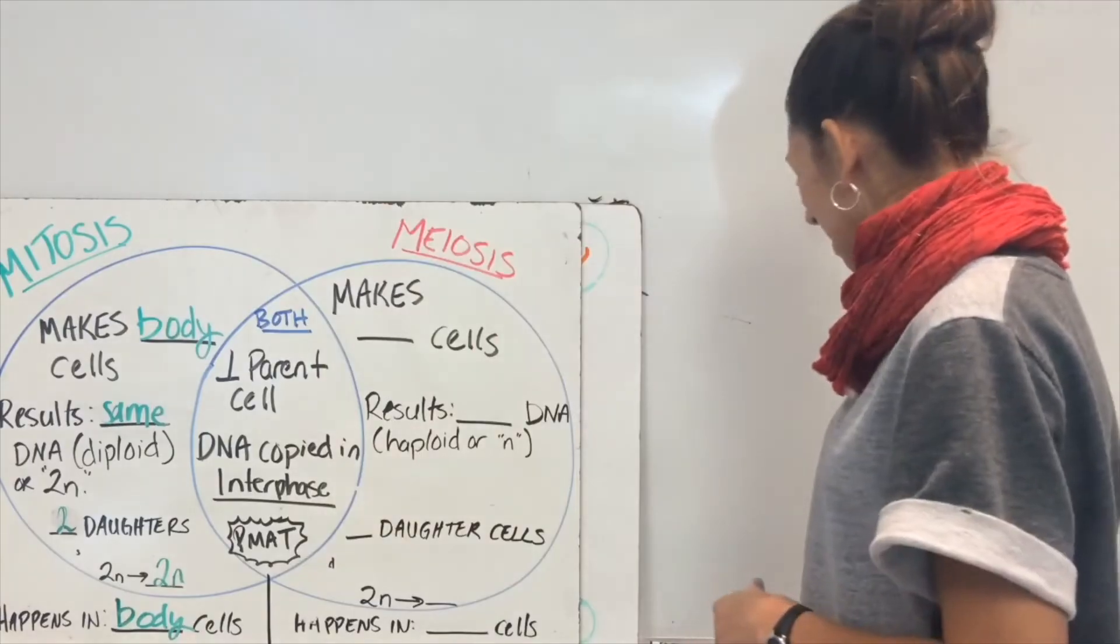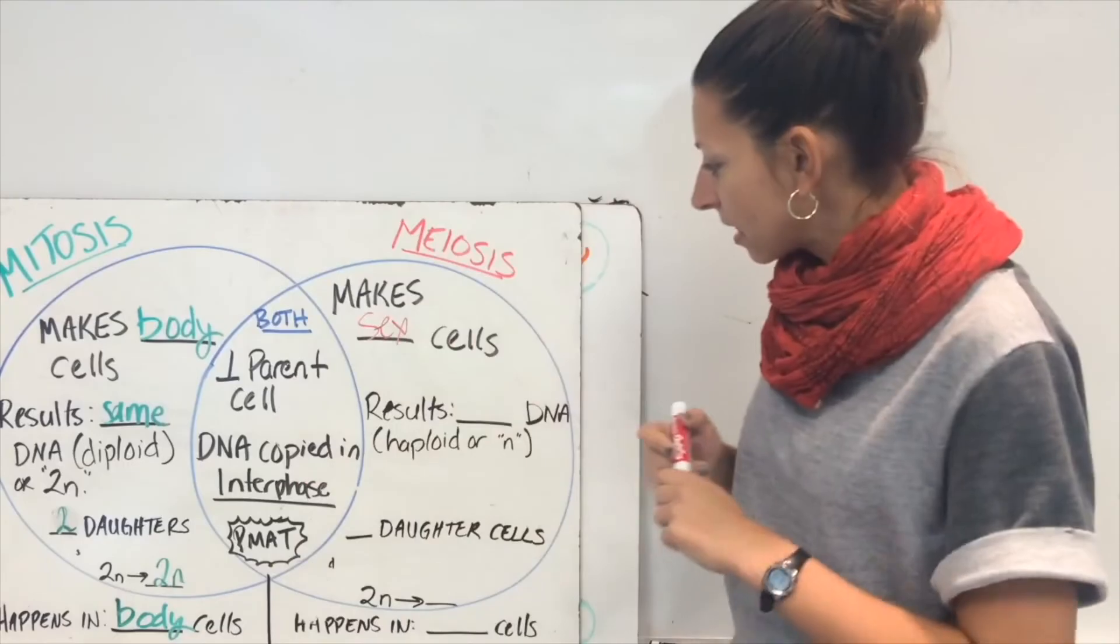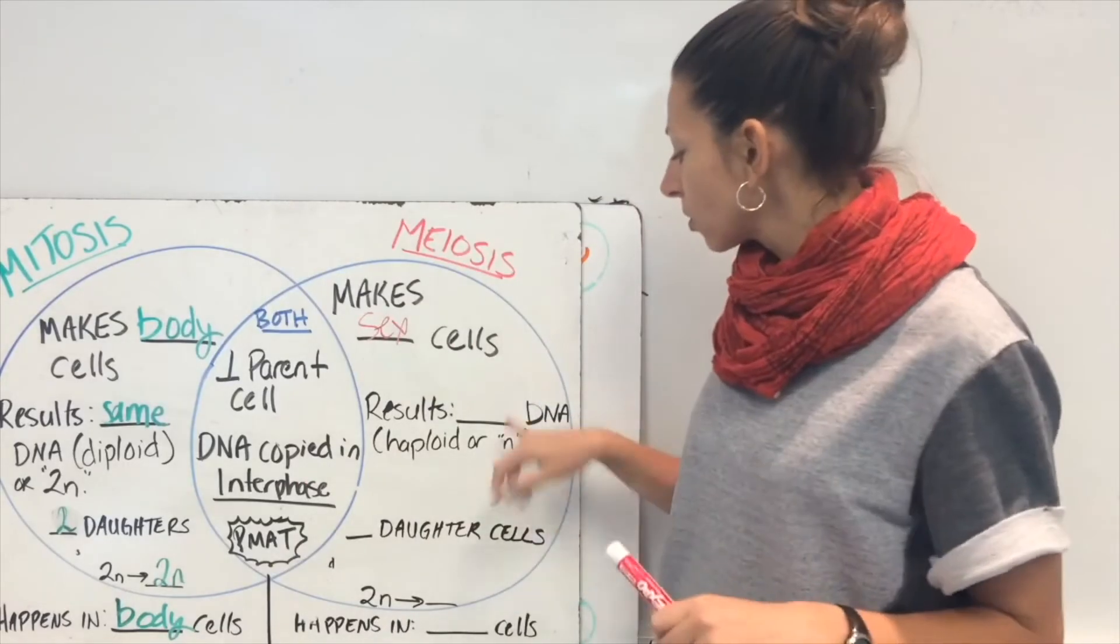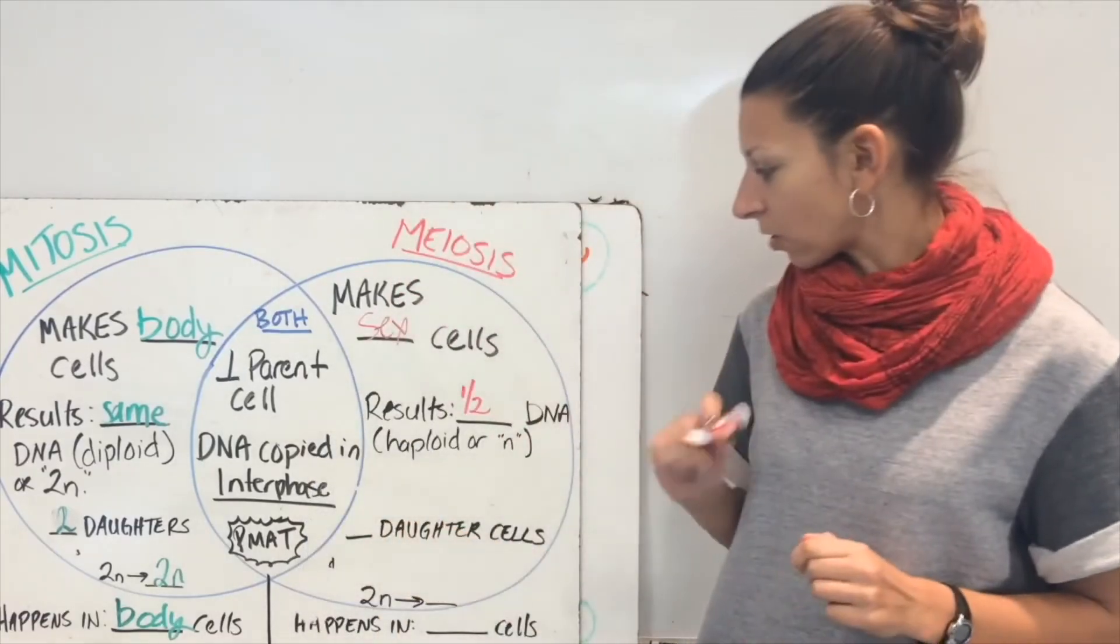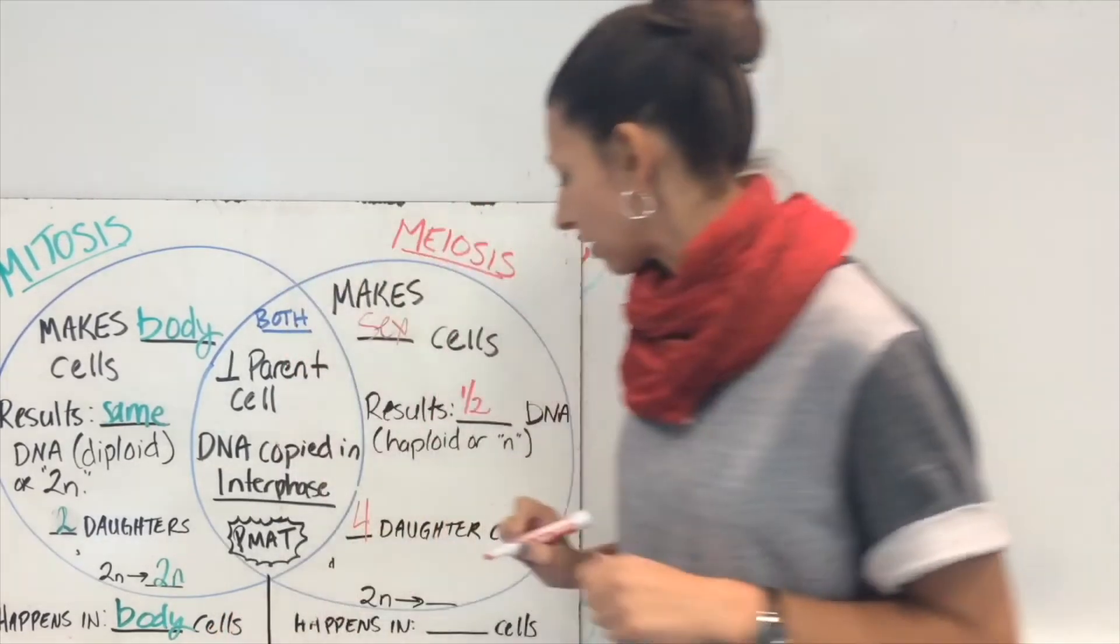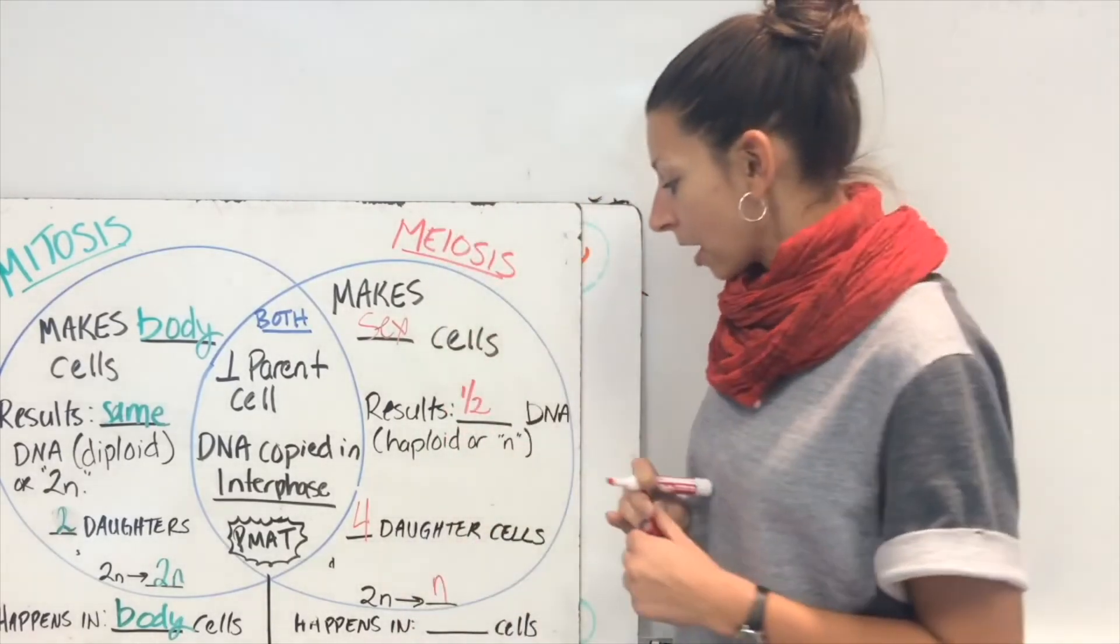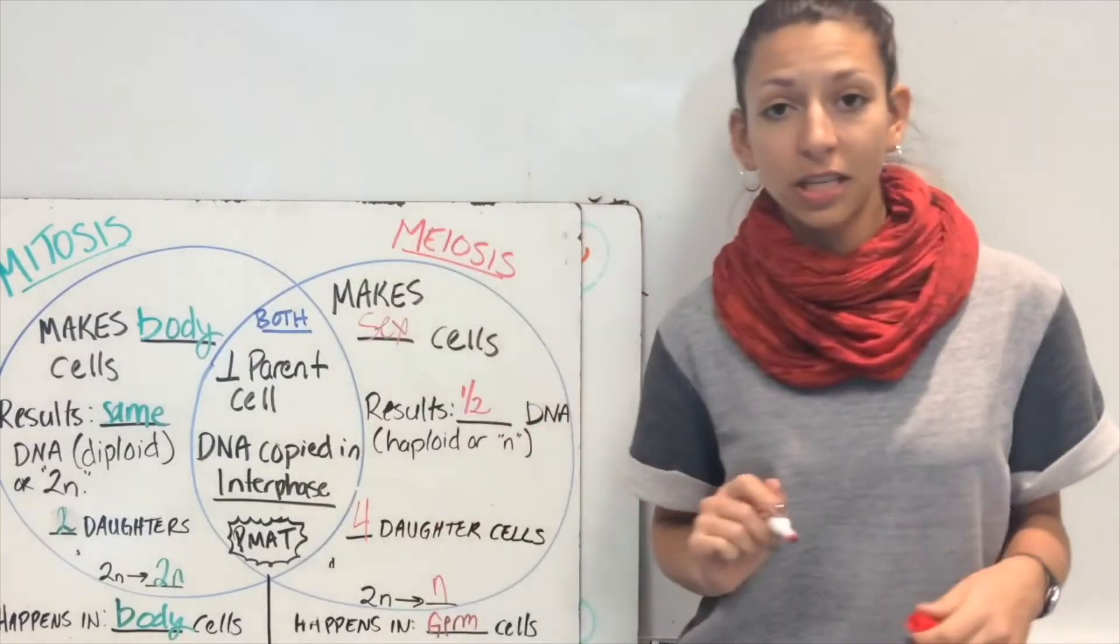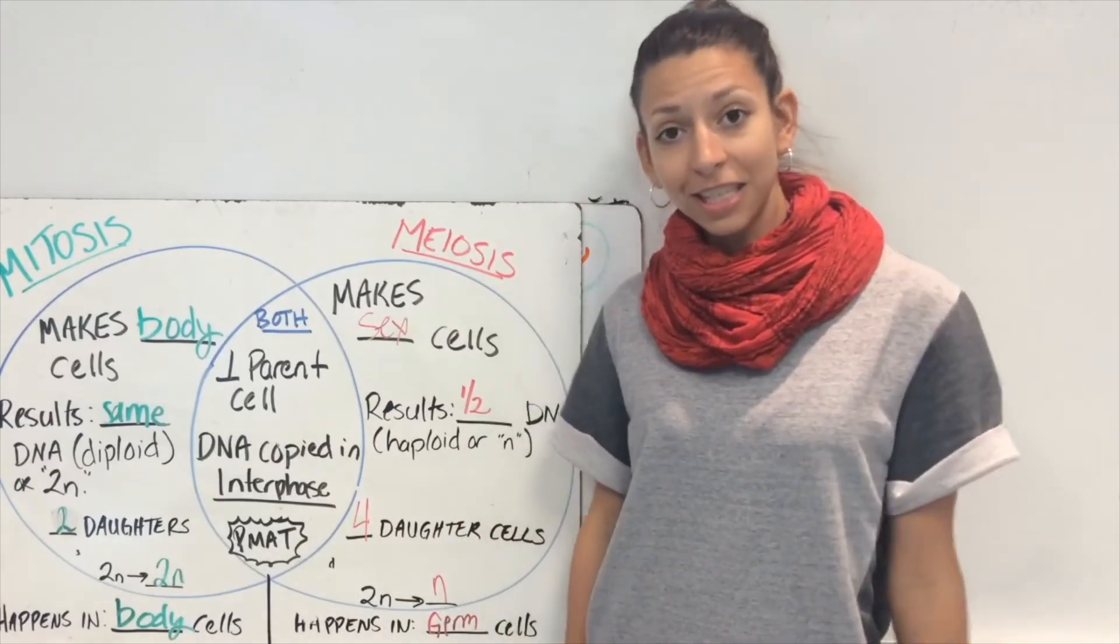In meiosis, we are talking about the process that will make sex cells. This is going to happen in our gonads or our sex organs. So it happens in specialized tissue. Our results is that we're going to have half the DNA as we started with, or we'll call it haploid or N. We will result with four daughter cells from this process. So we're going from 2N to N. Remember, that's half the original amount of DNA. And this, of course, is going to happen in what specialized cells we call germ cells. And generally, these are located in the gonads of us humans. And the gonads are our sex organs like our ovaries and our testes.